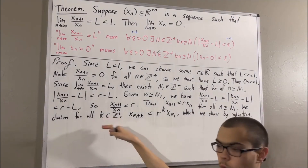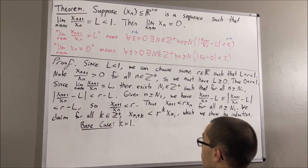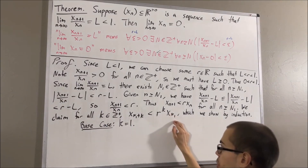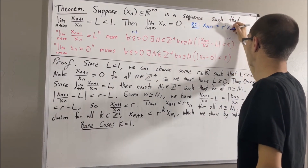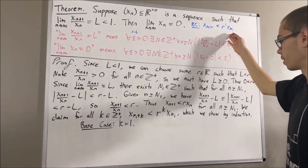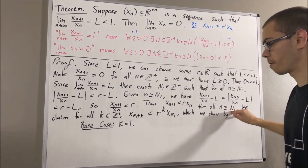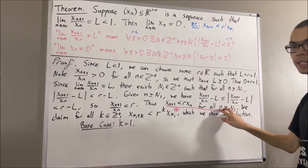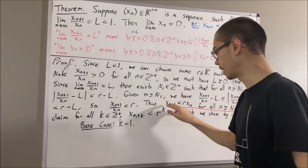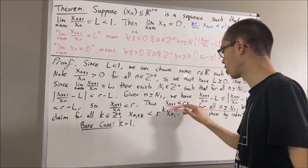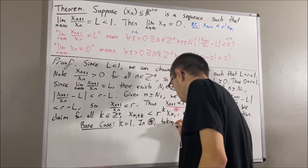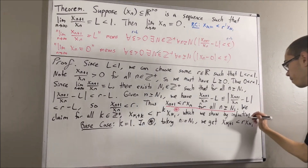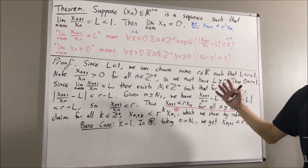Let's start with the base case where k equals 1. We're trying to show that x_{N1+1} < r^1 · x_{N1}. Using our starred inequality with n equal to N1, we get x_{N1+1} < r·x_{N1}, which equals r^1·x_{N1}. So we have shown exactly what we wanted to show. This completes the base case.